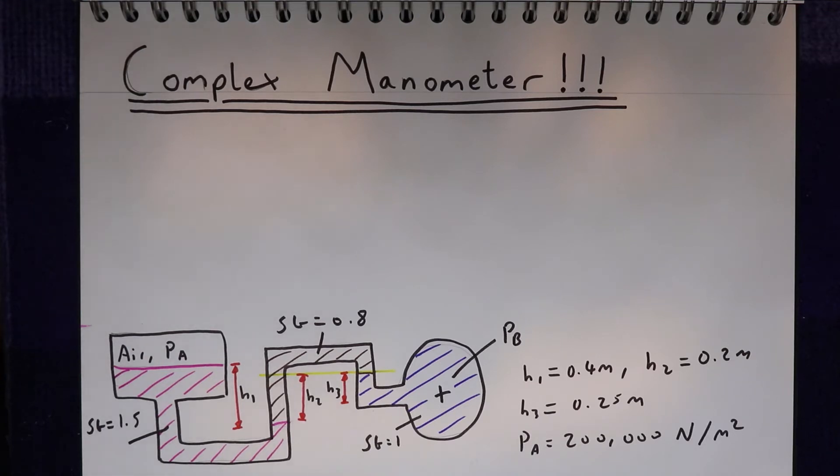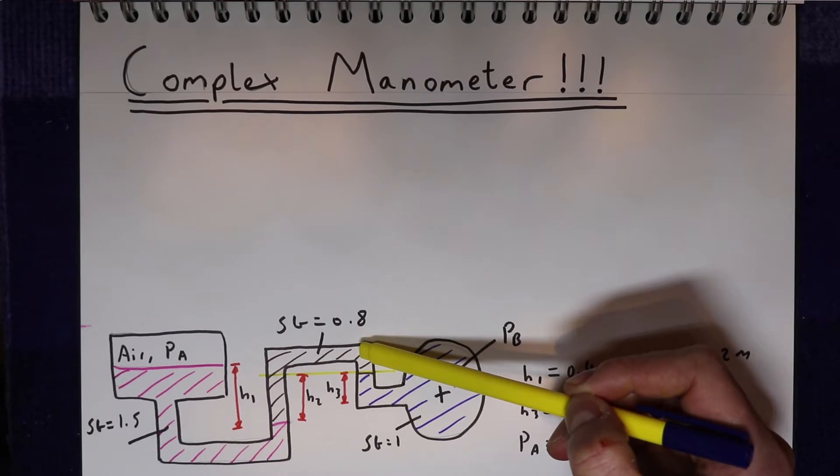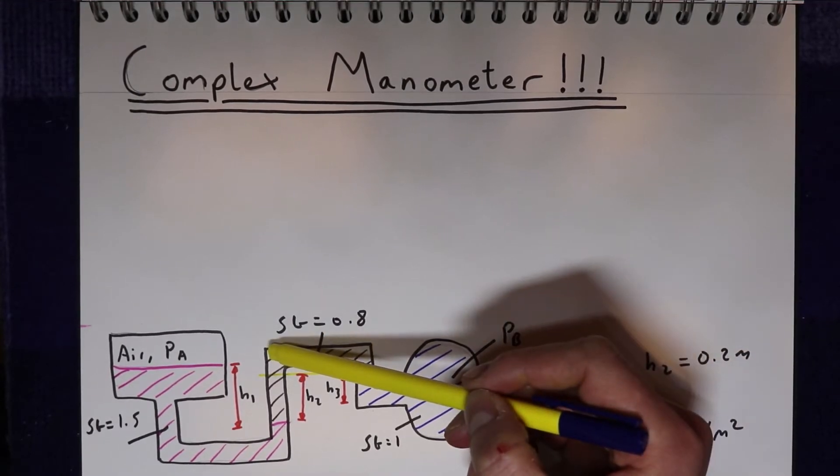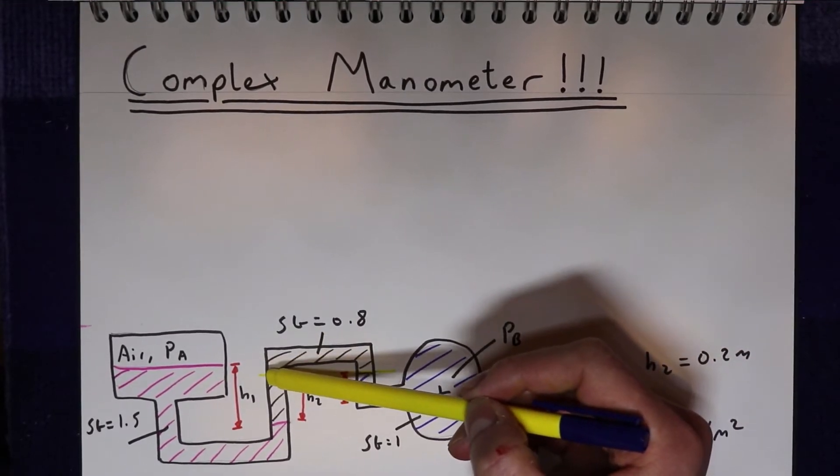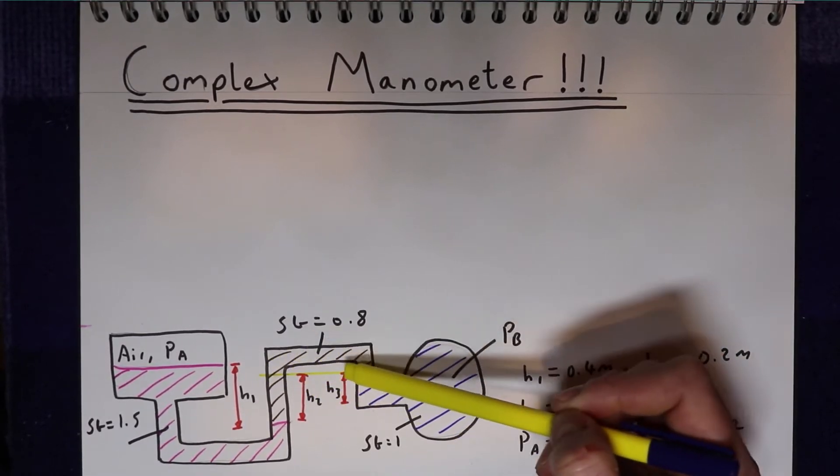So the two things we can say about this line is first of all we can ignore everything going on above it, because as we go up here we're losing pressure, but then we're regaining pressure because we're going down by the same amount on this side. So the difference in pressure between these two points above it is zero.